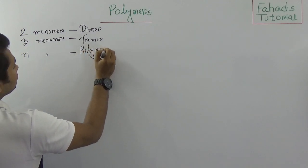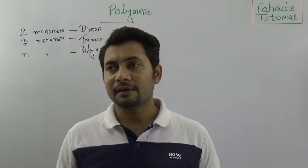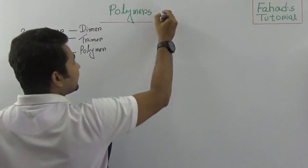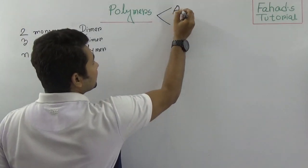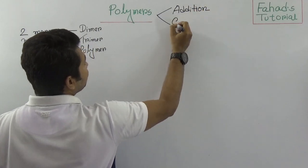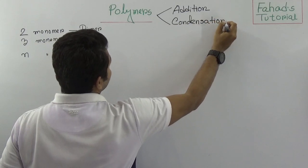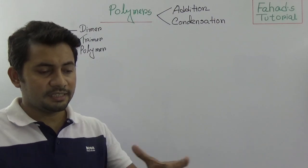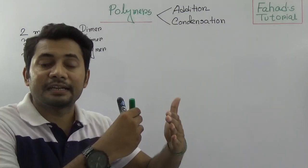According to structure, we say that polymers are of two types: addition polymer and condensation polymer. Addition polymers are those polymers formed by the addition reaction, when the monomers are directly connected with each other.